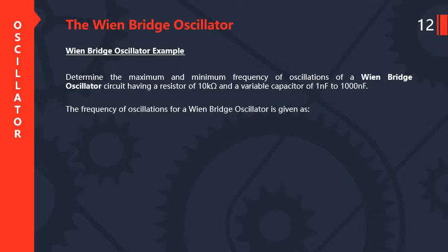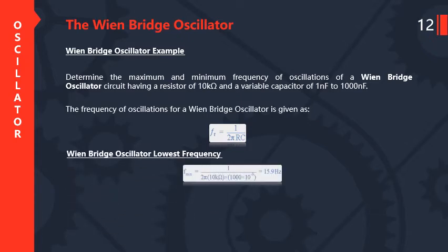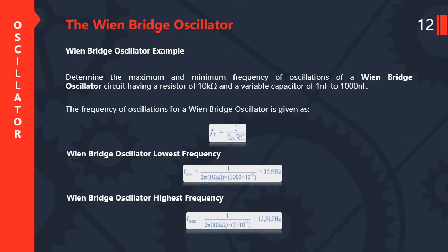Example of Wien's bridge oscillator: Determine the maximum and minimum frequency of oscillations of a Wien's bridge oscillator circuit having a resistor of 10 kilo-ohm and a variable capacitor of 1 nF to 1000 nF. The frequency of oscillation is given by FR equal to 1 upon 2π into RC. For the lower frequency band, F minimum equals 1 upon 2π times 10 kilo-ohm times 1000 nanofarad, giving 15.9 Hz. For the highest frequency, F maximum equals 1 upon 2π times R times C, giving 15,915 Hz.